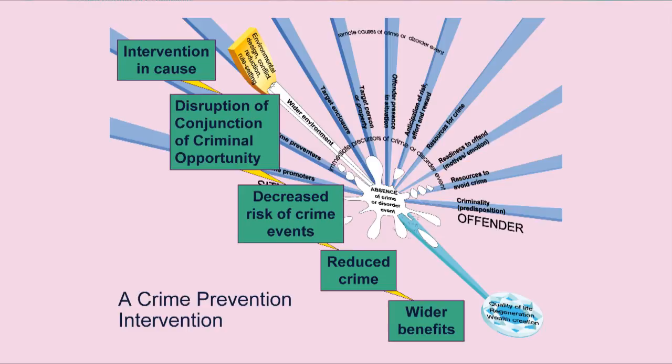This provides a map which links offender-oriented and situational approaches in one framework. Taking an environmental intervention — say, a pattern of muggings in a hospital car park — if it's easy for concealment, trimming the shrubs is an environmental design intervention. That interrupts one of the causes, which disrupts the conjunction of criminal opportunity, which actually reduces the risk of criminal events and, if you're lucky, gives you objective crime reduction.